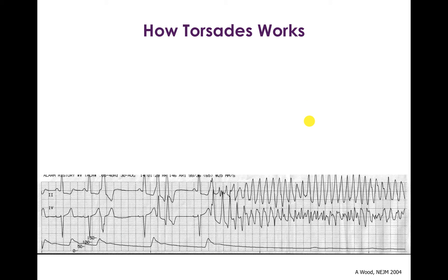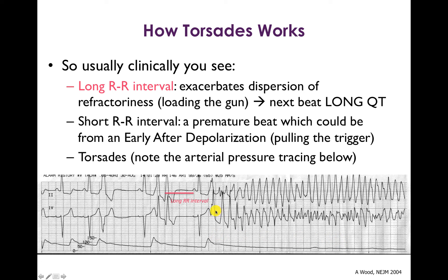Now let's put together loading the gun and pulling the trigger. Shown here is a tracing of a patient with Torsades. Note at the bottom, in an arterial waveform from a radial artery catheter, you can see that there is no meaningful arterial pressure during the Torsades event, which is shown on the right side here. Clinically, you usually see what people often refer to as long-short coupling prior to the initiation of Torsades. What that means is first you get a long RR interval — from bradycardia, or in this instance because of a PVC that set up a long RR interval.